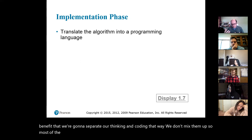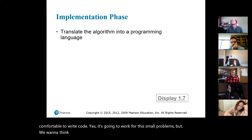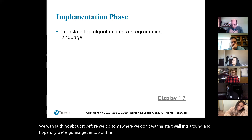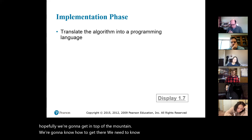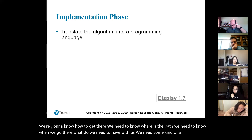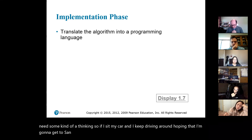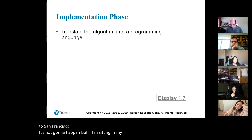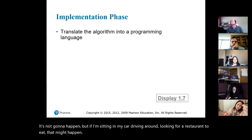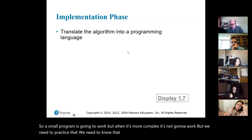Most programmers learn coding before learning design, so we're comfortable writing code and it works for small problems. But we want to think about it before we go somewhere — we don't want to just start walking around hoping we'll get to the top of the mountain. We need to know the path and what to bring with us. If I sit in my car driving around hoping to get to San Francisco, it's not going to happen. But driving around looking for a nearby restaurant? That might work. So a small program works without a plan, but when it's more complex, it won't. We need to practice planning.